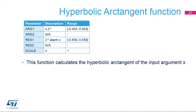This slide describes the features of the hyperbolic arctangent function. The primary argument is the input value x. Only values of x in the range minus 0.806 to plus 0.806 are supported. The value x must be scaled by a factor 2 raised to the negative n where n = 1. The scaled value x times 0.5 is programmed in arg1 and the factor n = 1 must be programmed in the scale parameter. The secondary argument, arg2, is unused. The primary result, res1, is the hyperbolic arctangent of x; res1 must be multiplied by 2 to obtain the correct value. The secondary result is not used.